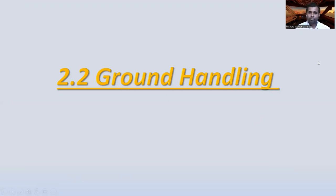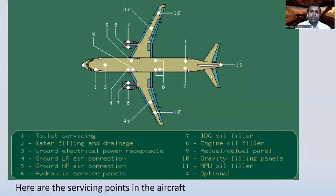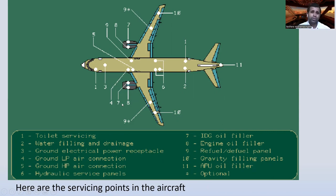Now let's move to section 2.2 — Ground Handling. You can see the ground handling servicing points on the aircraft. There are normally 11 servicing points on the aircraft.